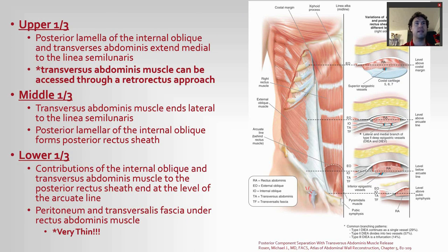In the upper third of the abdomen, the posterior lamella — the internal oblique and transversus abdominis muscle — extends medially to the linea semilunaris. The transverse abdominis muscle can be accessed through the retrorectus approach. As you go caudad, especially once you get below the arcuate line, which is right around the umbilicus, the transversus fascia becomes very thin and actually turns into peritoneum.